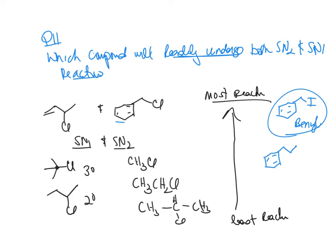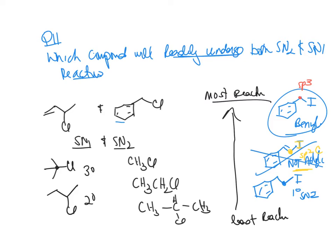The other options for Q11: one compound had a halogen on an sp2 carbon — you won't get substitution reactions on sp2 carbons, pay attention to hybridization. Another was a plain primary halide — fastest in SN2 but won't go SN1. A vinyl halide goes neither SN1 nor SN2. A secondary halide goes slowly in both. So the benzyl halide is the answer.